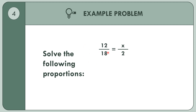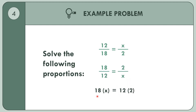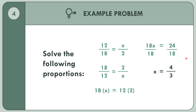Example 4: 12 over 18 equals X over 2. Using the reciprocal property: 18 over 12 equals 2 over X. Then cross product: 18 times X equals 12 times 2, so 18X equals 24. Dividing both sides by 18 and simplifying using the GCF of 6: 24 divided by 6 is 4, and 18 divided by 6 is 3. So X equals 4 over 3.